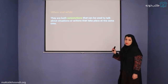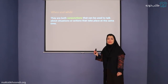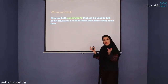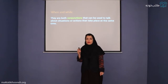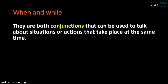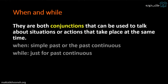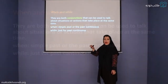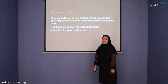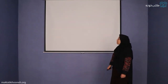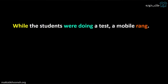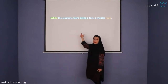Now, what do 'when' and 'while' do in these sentences? They are conjunctions joining two sentences together. As you can see, they can be used to talk about situations or actions that take place at the same time. We use 'when' for the simple past or the past continuous sentence — for both of them. But 'while' can only be used with the past continuous.